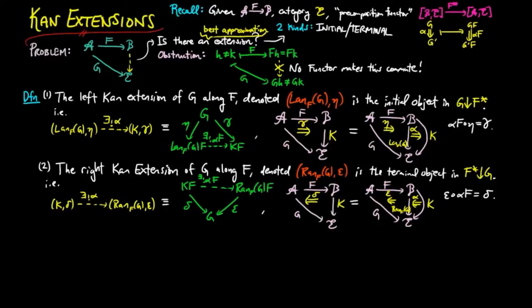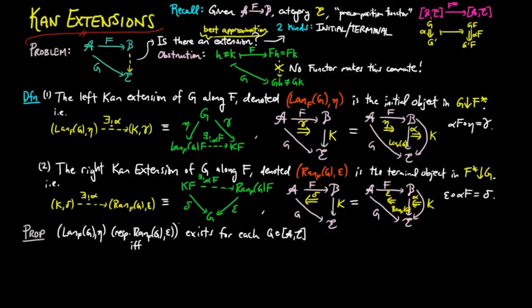By the definitions of Kan extensions, it is easy to prove the following. The left, respectively right, Kan extension of G along F exists for each functor G, if and only if, Lan_F is a left adjoint functor to F upper star, respectively, Ran_F is a right adjoint functor to F upper star.